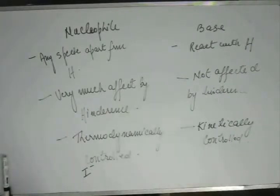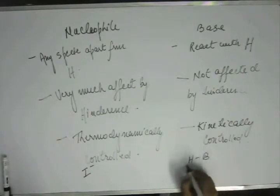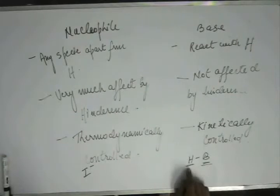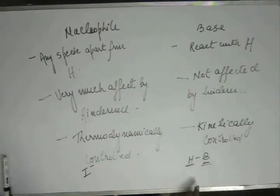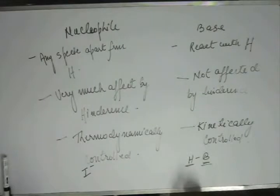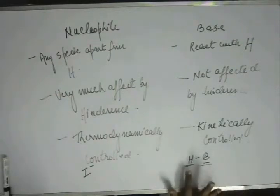Another reason why I⁻ cannot be a base: a base reacts with hydrogen, and after reacting, there is a bond between hydrogen and the base. If this bond is not strong enough, the abstraction of hydrogen will not be easy. When you abstract hydrogen from a substrate, that bond is broken — some energy is given — and that energy must be compensated by the new bond formed between hydrogen and the base. So the bond between hydrogen and the base must be strong enough.